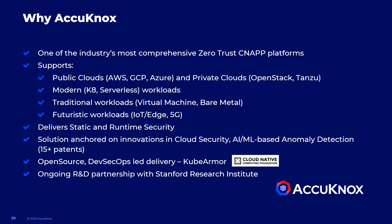In summary, Acunox delivers one of the most comprehensive zero-trust CNAPP solutions — one that is cloud-native, one that is open source-led, and one that addresses both static and runtime security. Our open source project, KubeArmor, has been embraced by CNCF and has over 170,000 downloads. We developed this in partnership with the prestigious R&D innovator Stanford Research Institute, who is an investor and technology partner. We have over 15 patents that cover every aspect of zero-trust cloud security. We are committed to delivering a robust and comprehensive security platform that will protect you against current and emerging threats. Thank you for your time — reach out to us if you want a demo or to take a test drive. Have a wonderful day.